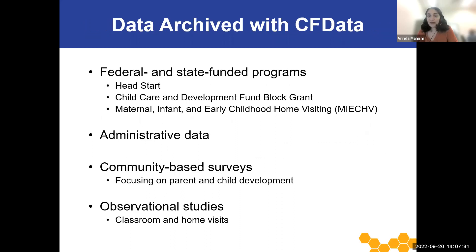We have over 350 data sets archived at CFData with accompanying documentation for secondary data analysis on important issues of policy and practice relevance. Our wide range of data includes data on federal and state-funded programs such as Head Start, the Child Care and Development Fund Block Grant, and the Maternal, Infant, and Early Childhood Home Visiting Program. We also have administrative data, community-based surveys focused on parent and child development, and observational studies in classrooms and homes. All of our data are available to researchers to analyze free of charge.